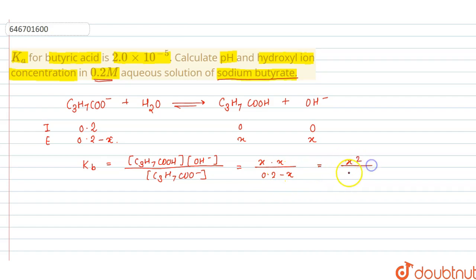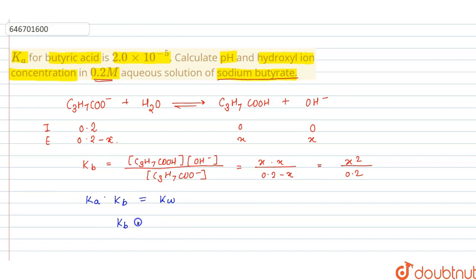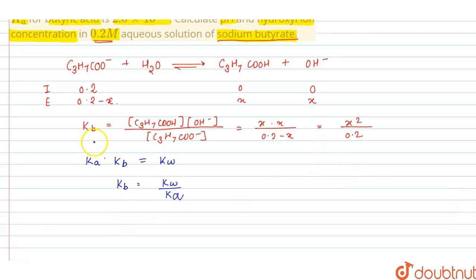Now we use the equation Ka × Kb = Kw, where Kw is the ionization constant of water. From this, Kb = Kw / Ka.